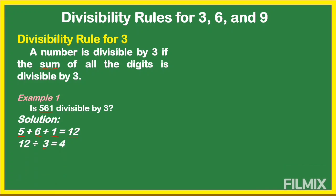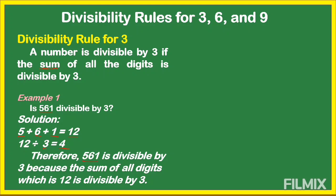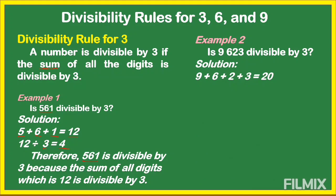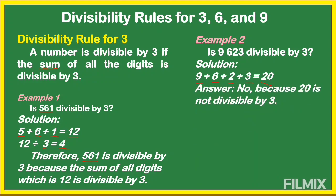12 divided by 3 equals 4, so 12 is divisible by 3. Therefore 561 is divisible by 3 because the sum of all digits, which is 12, is divisible by 3 — we can find 12 in skip counting: 3, 6, 9, 12. Another example: is 9,623 divisible by 3? We add all the digits: 9 plus 6 is 15, plus 2 is 17, plus 3 is 20. Is 20 a multiple of 3? Counting: 3, 6, 9, 12, 15, 18, 21 — 20 is not a multiple of 3, so 9,623 is not divisible by 3.